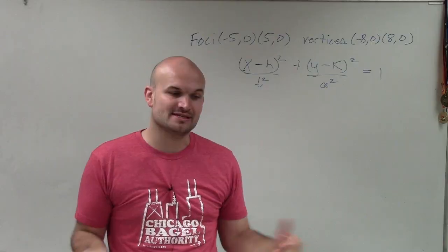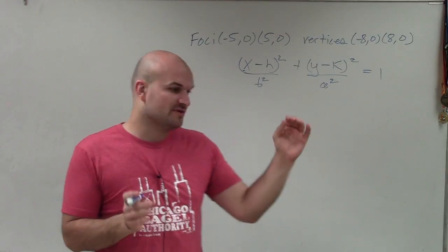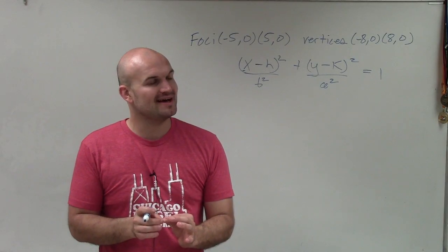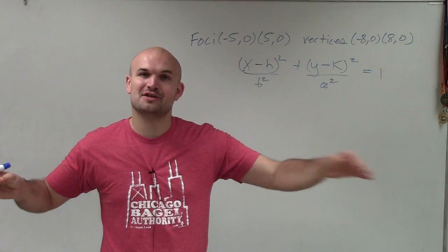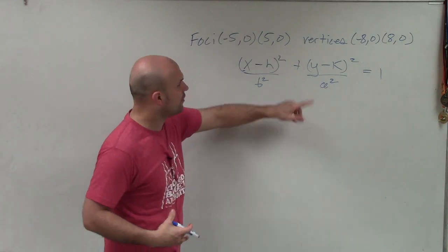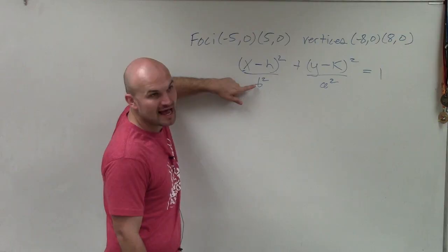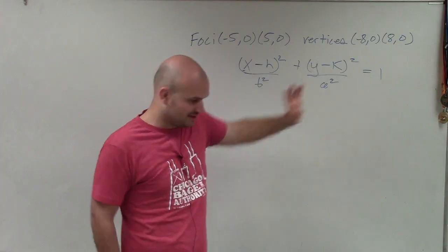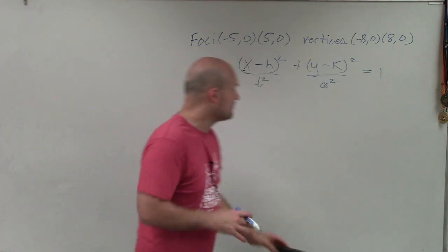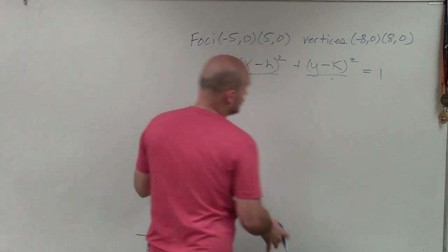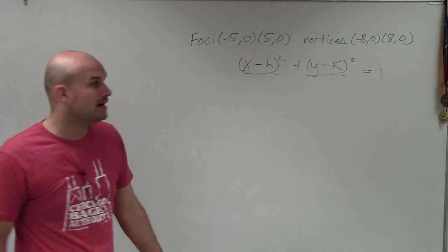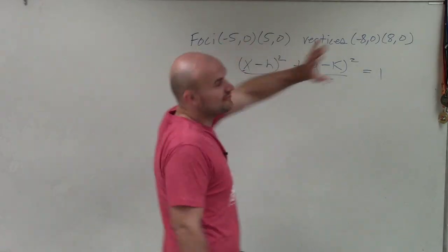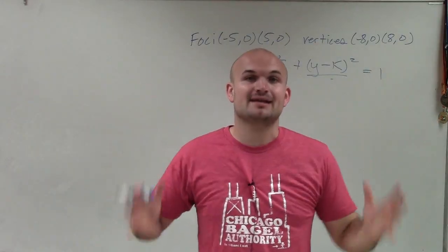And we know where the major axis is based on where the vertices are. So if we know where the center is and the vertices are horizontal across each other, then we know the major axis is horizontal. And therefore, our a² is going to be under the x. However, if our vertices are vertical across from each other, then the a² is going to be under the y. So whenever I'm doing a problem and I'm going to leave the a and b squared alone for right now, and I don't know what h and k are as well. But whenever I'm providing information and I want to write the equation, the best thing I like to do is make the picture.